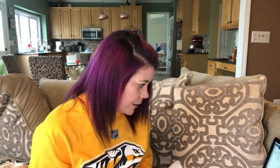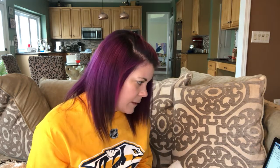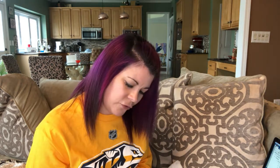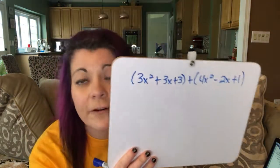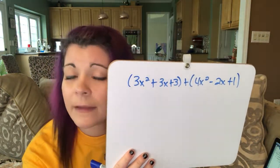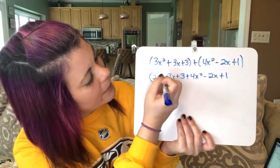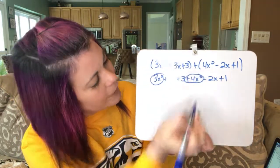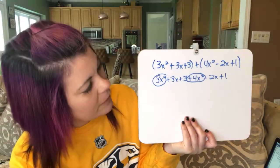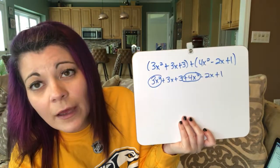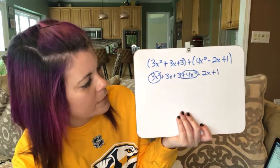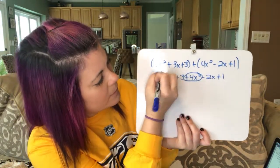We have 3x squared plus 3x plus 3, plus 4x squared minus 2x plus 1. The first step is to drop the parentheses, rewrite, and then combine like terms. So: 3x squared plus a positive 4x squared — that's 3 plus 4 equals 7, so 7x squared. Mark those out.